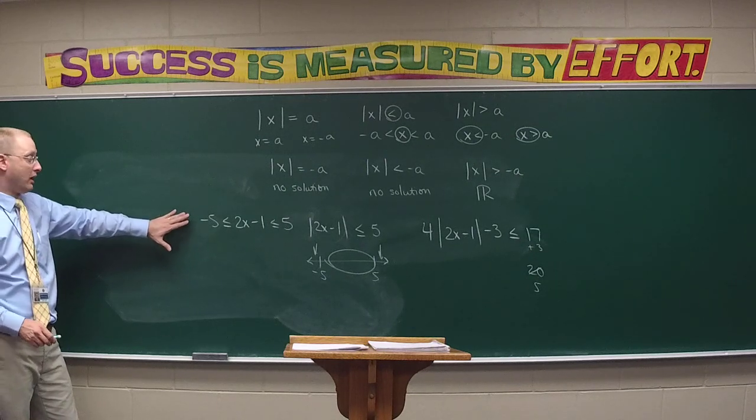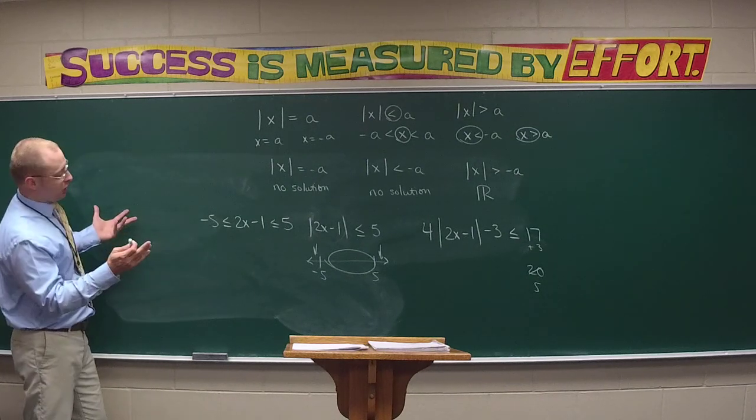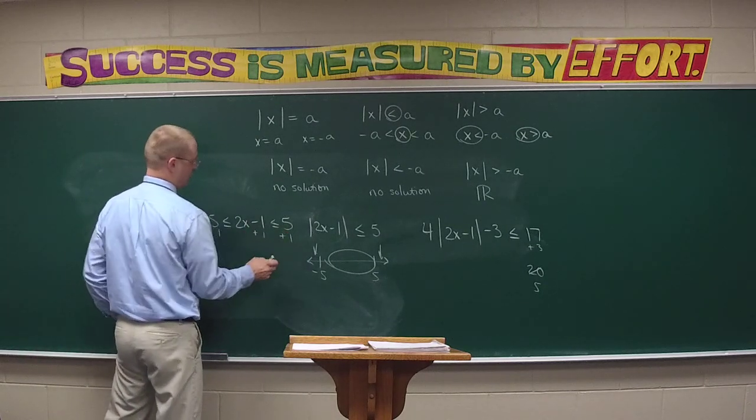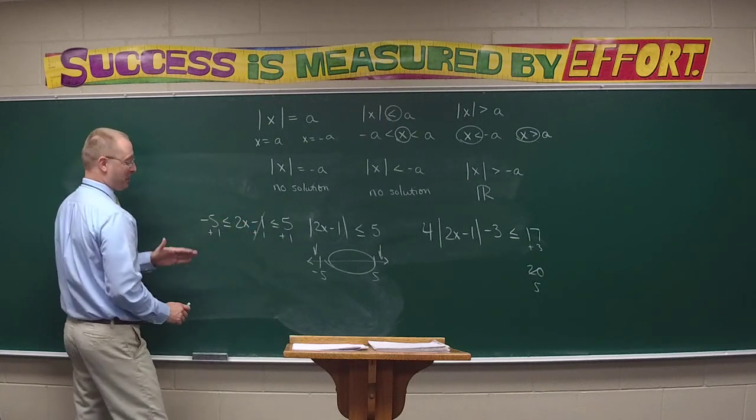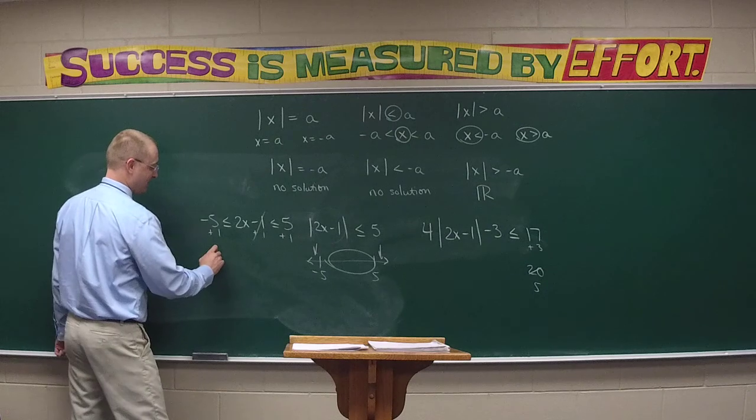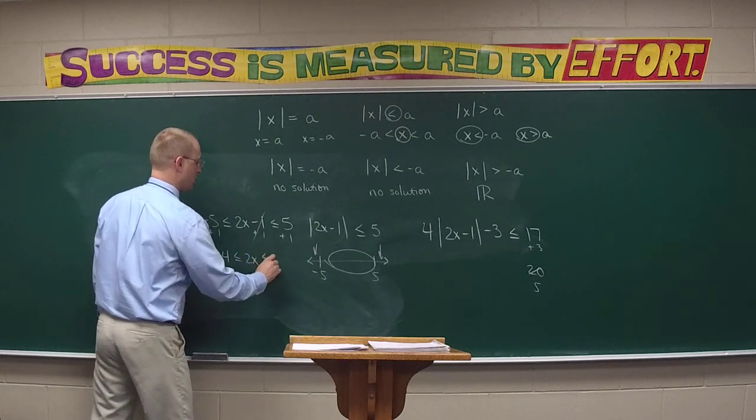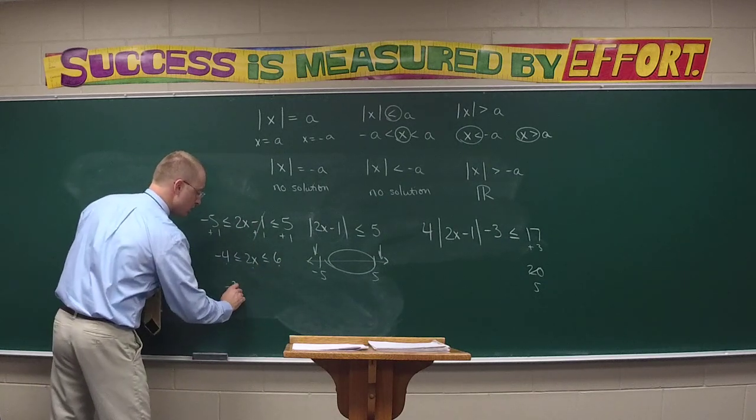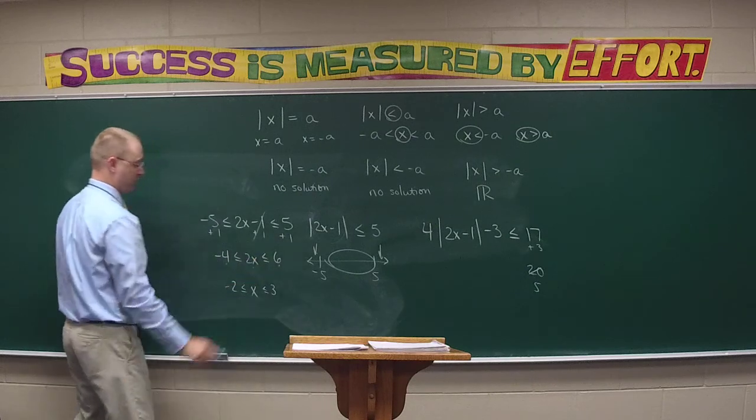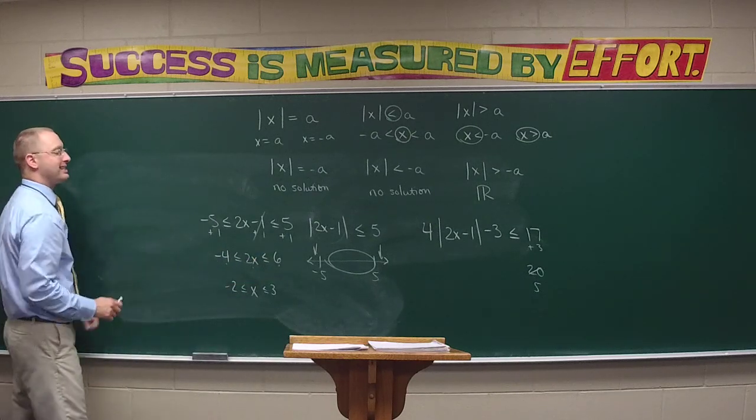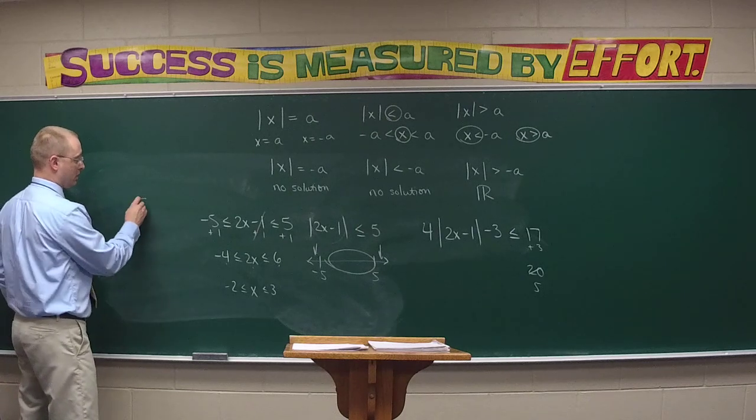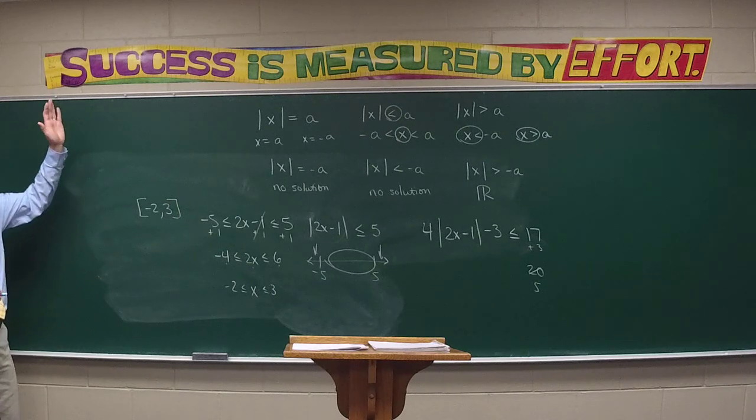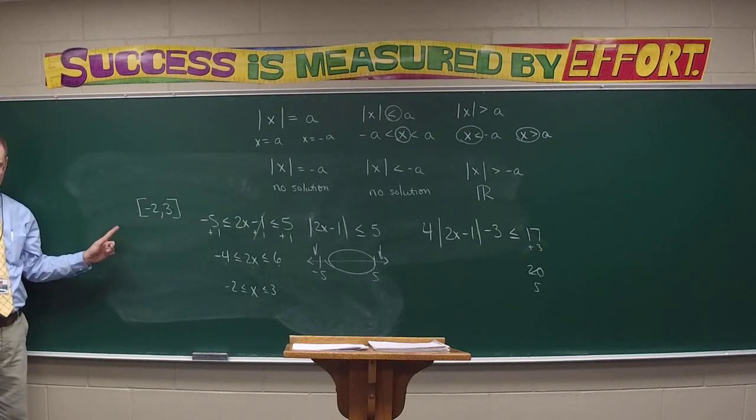I have a less than or equal to, and any time we've got absolute value that's less than, where does this thing go with a less than symbol? In the middle. Less than always goes in the middle. If it's greater than, it falls outside the two edges. So I've got negative 5 less than or equal to 2x minus 1 less than or equal to 5. Make sense?